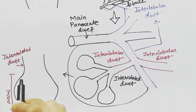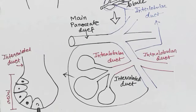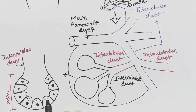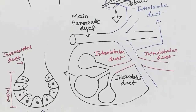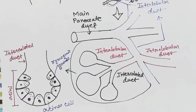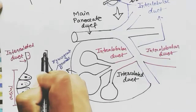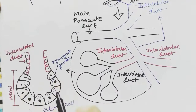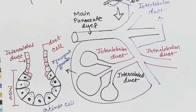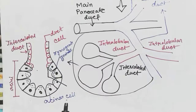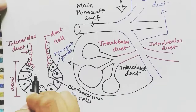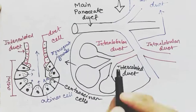The acinus has cells that are pyramidal in structure and have prominent nuclei. These acinar cells also have zymogenic granules. The cells of the duct are called duct cells, and the duct cells present inside the acinus are called central acinar cells.